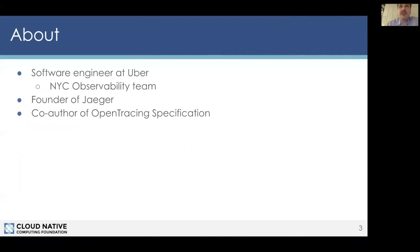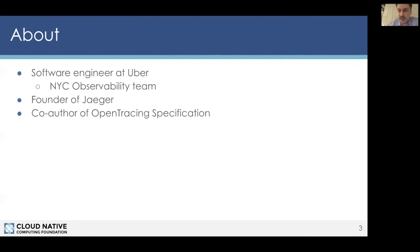Just a brief intro about myself. I am a software engineer at Uber. I'm working on an observability team. Our team deals with things like metrics, alerts, logs, and traces. I'm also the founder of Jaeger. It started here at Uber a few years back. I'm also a co-author of the OpenTracing specification, which is an API that Jaeger libraries implement.